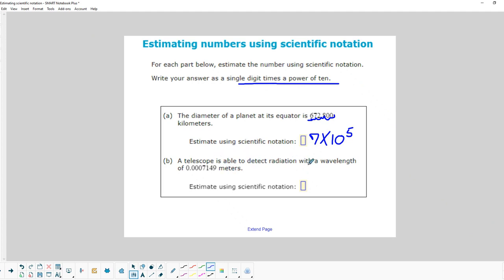A telescope is able to detect radiation with a wavelength of this many meters. So we're going to put it in scientific notation. Behind the decimal, the numbers are so small, it's not going to cause this 7 to round up to an 8. So we're just going to call this 7 times 10. And we went 1, 2, 3, 4, so minus 4 power. This is how we estimate using scientific notation.